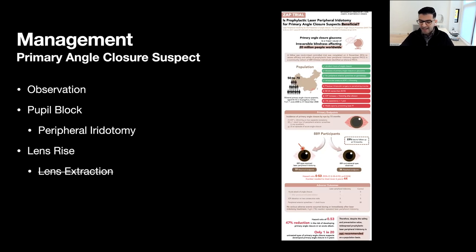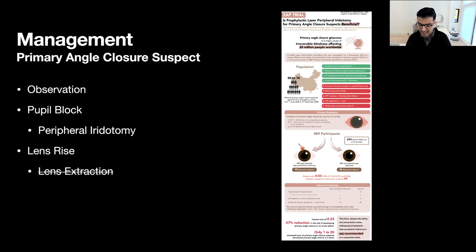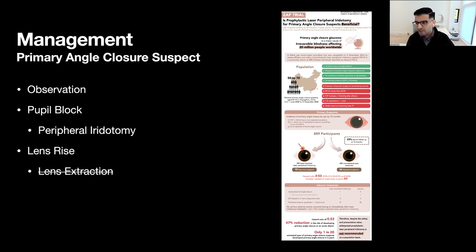For PACS due to lens rise: given the low risk — we talked about only about 4% even developing primary angle closure — the risk of developing primary angle closure glaucoma necessitating lens extraction in a patient with PACS seems like an overkill. If there is some underlying pupil block in my patients with large lens rise angle closure, I would certainly offer a peripheral iridotomy, but I'm really not stepping up to lens extraction for my patients with lens rise who have simply primary angle closure suspect disease.